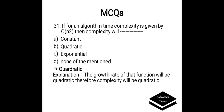If for an algorithm time complexity is given by O(n²), then complexity will be: a) constant, b) quadratic, c) exponential, or d) none of the mentioned. Correct answer is quadratic. The growth rate of that function will be quadratic, therefore complexity will be quadratic.